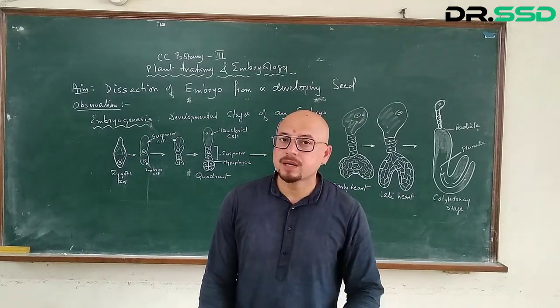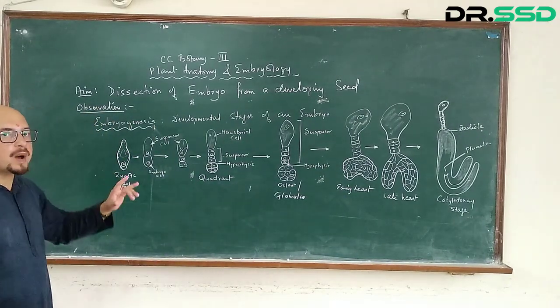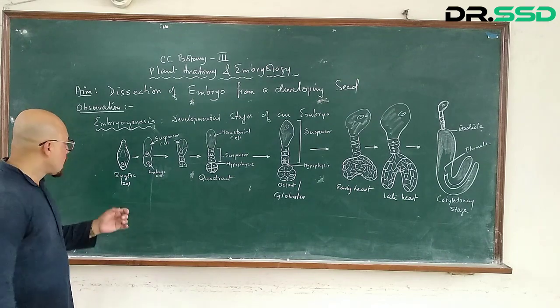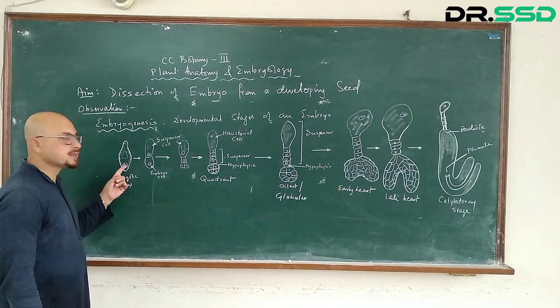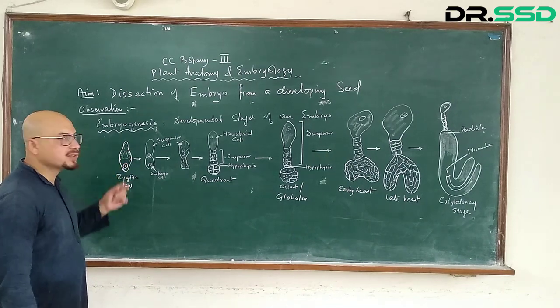And the story begins with the zygote. So you see the zygote is one cell. Now the zygote has a nucleus and a vacuole and peripherally placed cytoplasm.